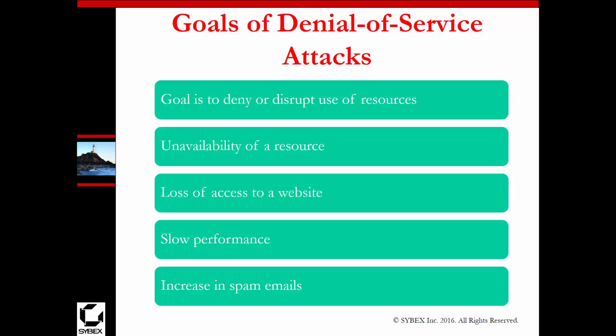We are also talking about slower performance. It could also lead to an increase in spam emails. For example, I'm working with one client now with a Barracuda. The Barracuda itself is actually blocking like 10,000 to 15,000 spam emails a day, but that blocking of email is actually taking resources away from that Barracuda — so in a way, it's a denial of service attack, because we are sending malicious or fake communication to the device to consume its resources.